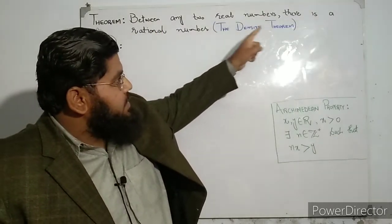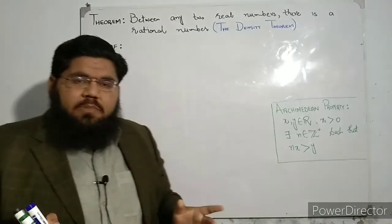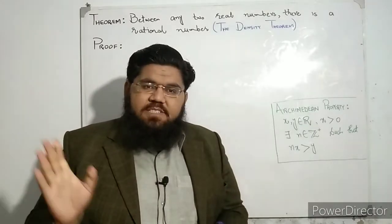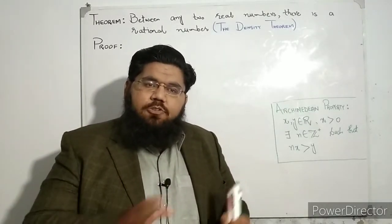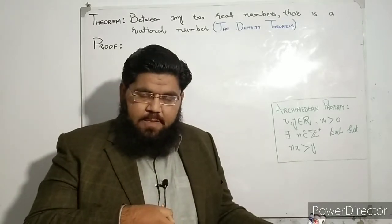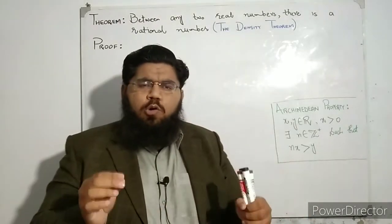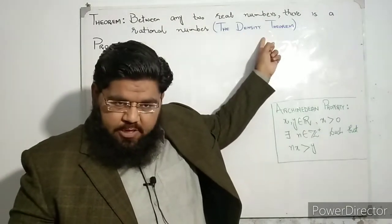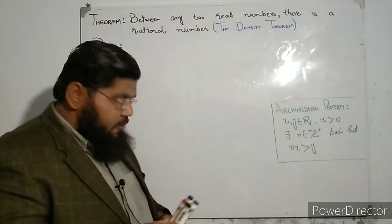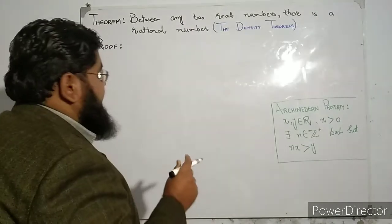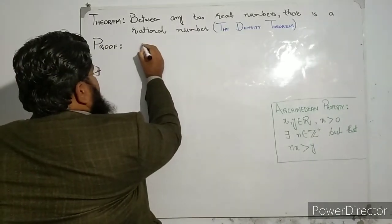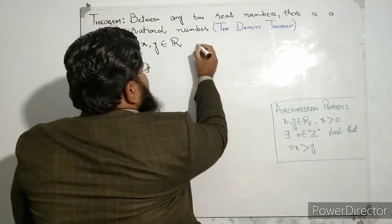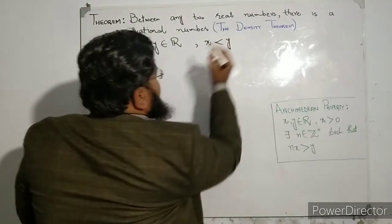This theorem states that between any two real numbers there is a rational number. Now these two real numbers can be rational as well as irrational. So this also means that between any two irrationals there is a rational number. This theorem is basically telling us how closely packed these numbers are, and that is why we sometimes call it the density theorem. Let's start its proof by supposing two real numbers x and y.